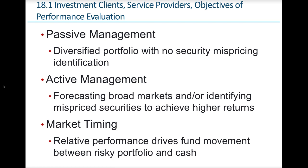An active management style involves trying to forecast where stock prices are going, looking at the broad markets, identifying undervalued stocks, and trying to achieve higher returns than the overall market or a passive strategy. Active management can be successful for very talented fund managers — like a Warren Buffett or Peter Lynch type — who can outperform the market. But it requires a lot of additional labor, analysts, and work, so expense ratios are higher.